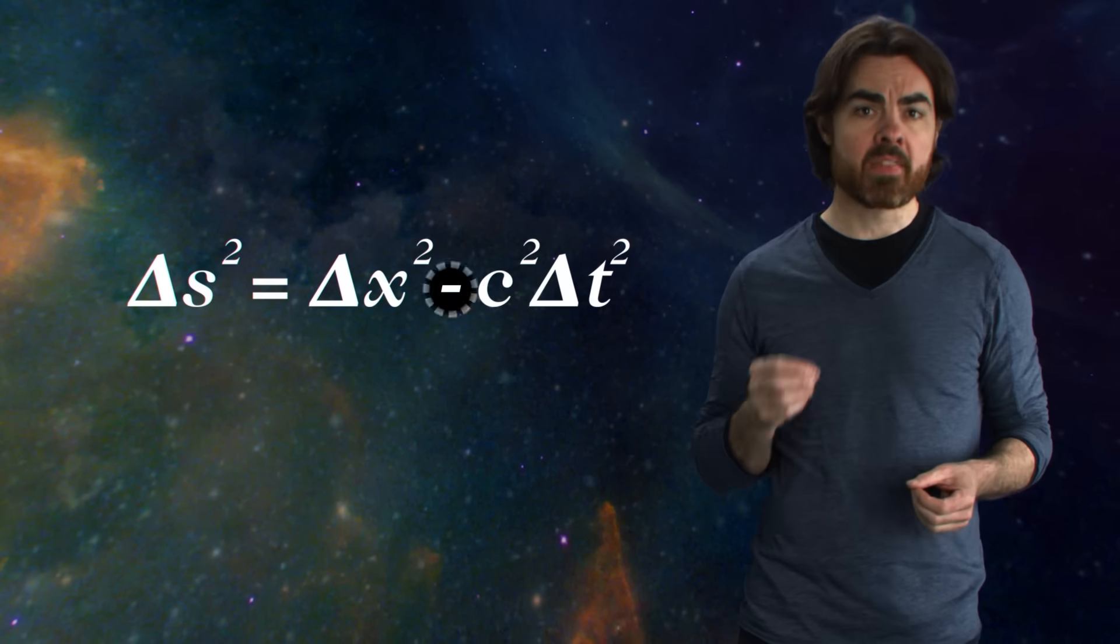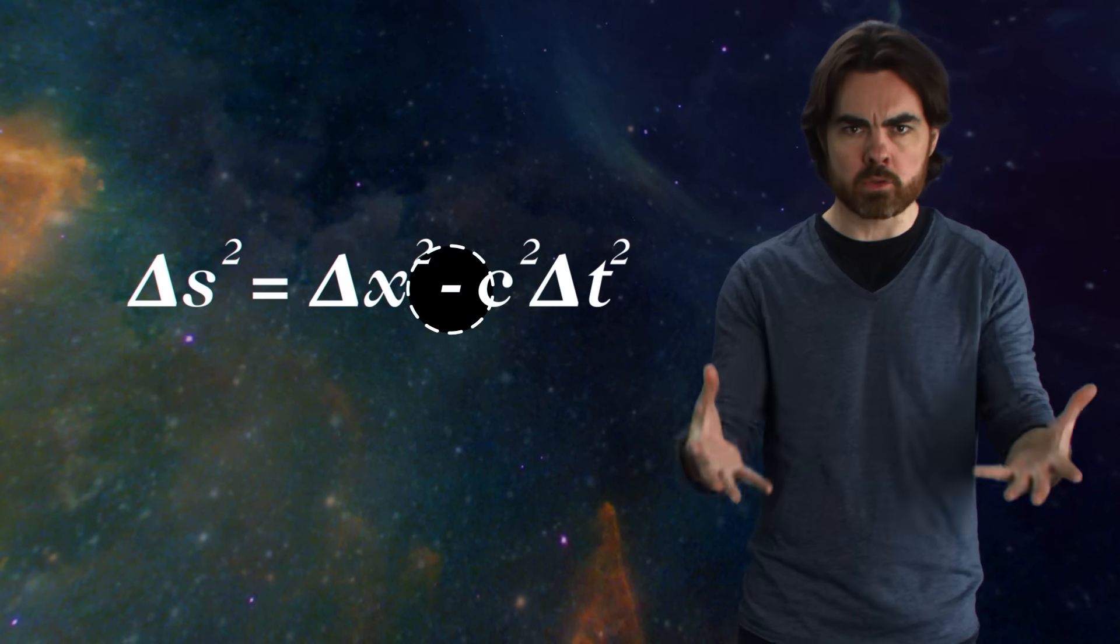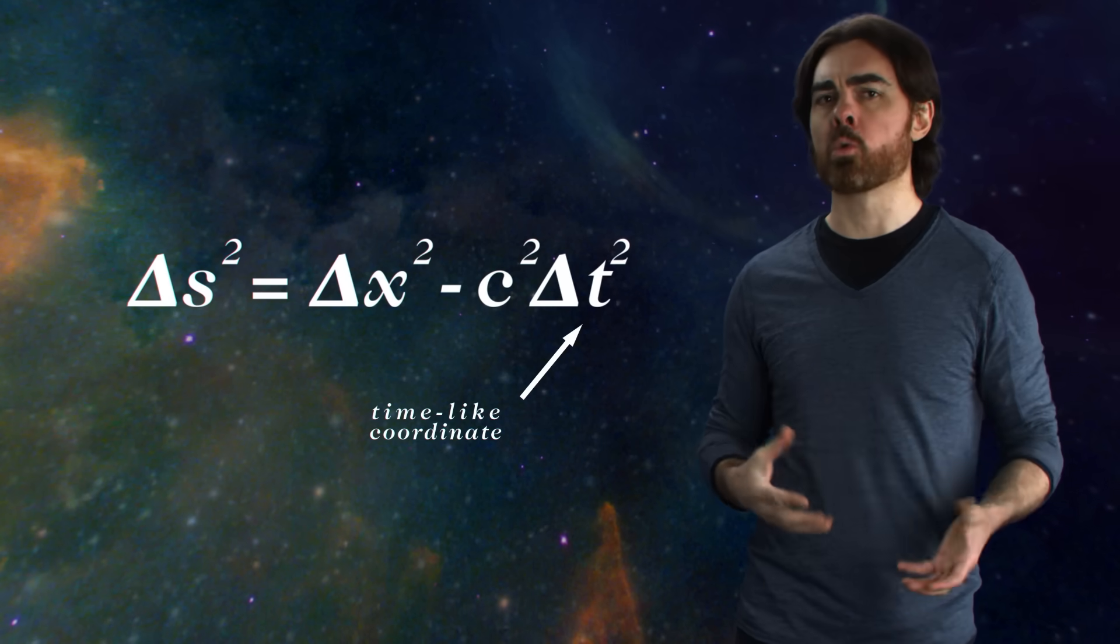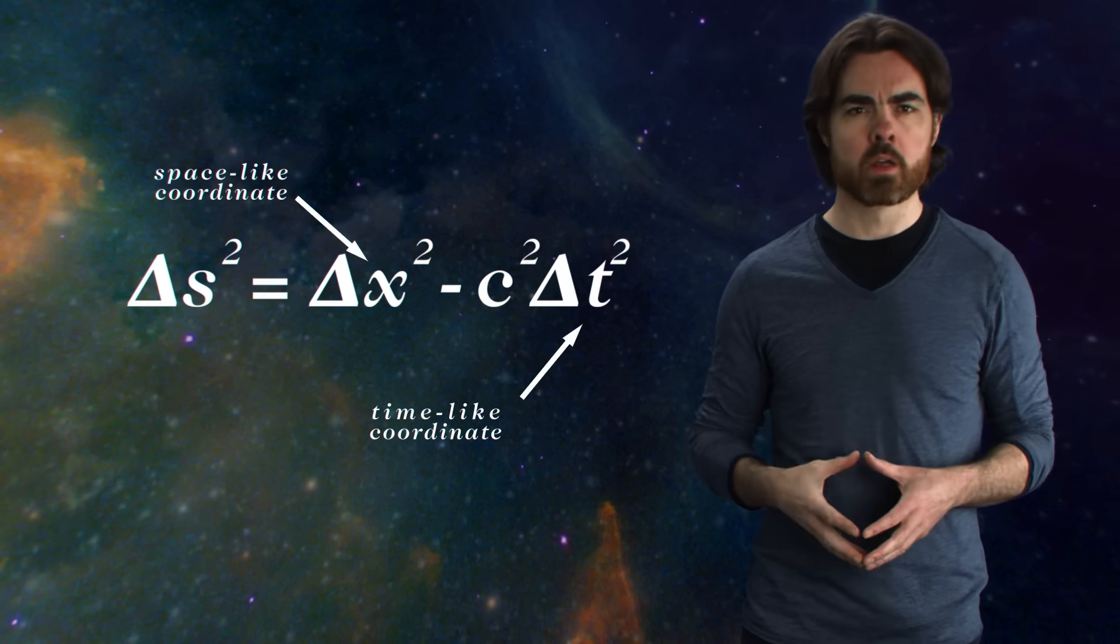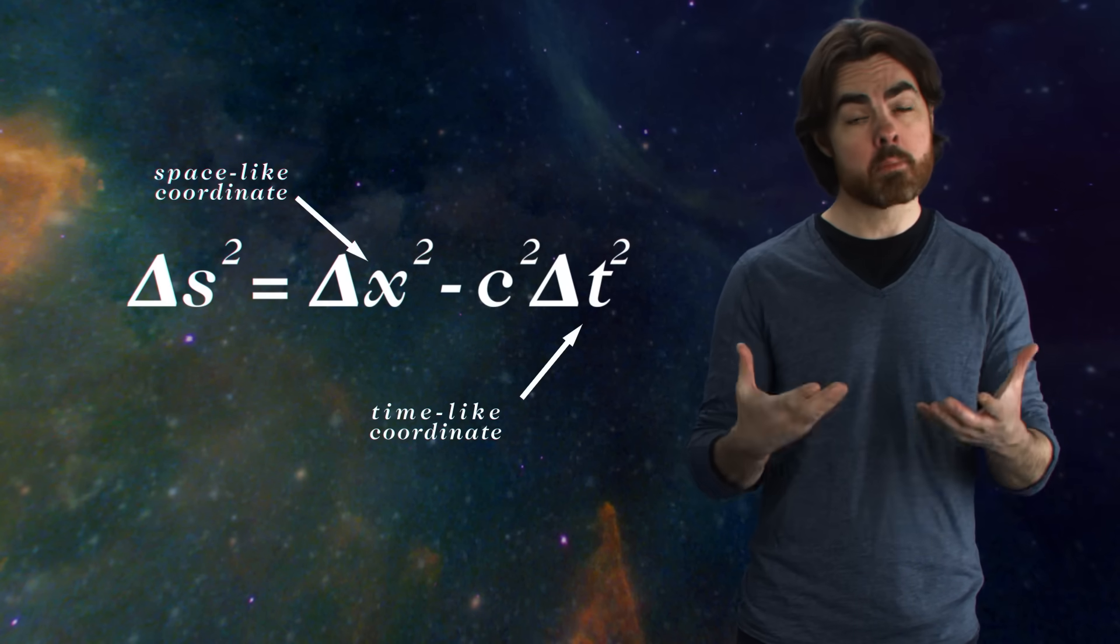In flat space-time, that negative sign in front of the delta t drives that forward evolution. This makes t the time-like coordinate, while x is the space-like coordinate. For causality to be maintained, the time-like coordinate must always increase. Reversing causality means flipping the sign of the space-time interval. In our episode on superluminal time travel, we saw that in flat space, this means traveling faster than light, which is, of course, impossible.